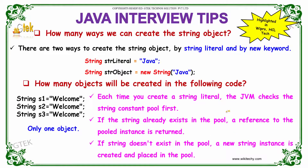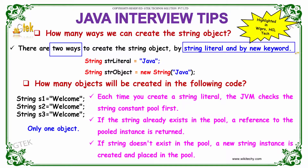How many ways can we create a string object? The answer is there are two ways to create a string object: by using a string literal and by using the new keyword.